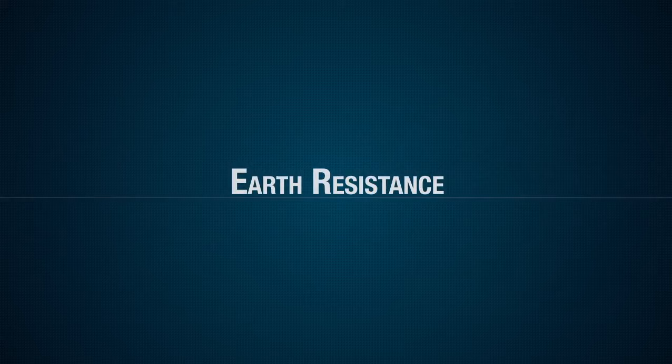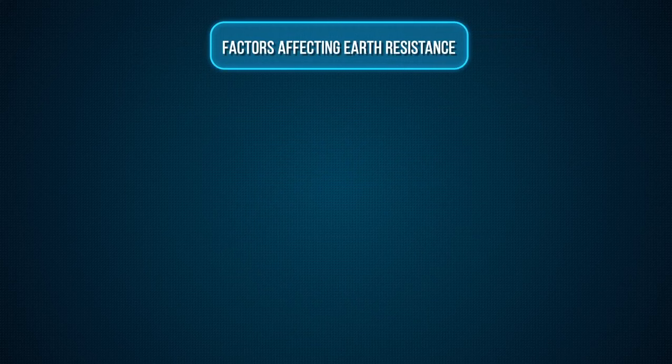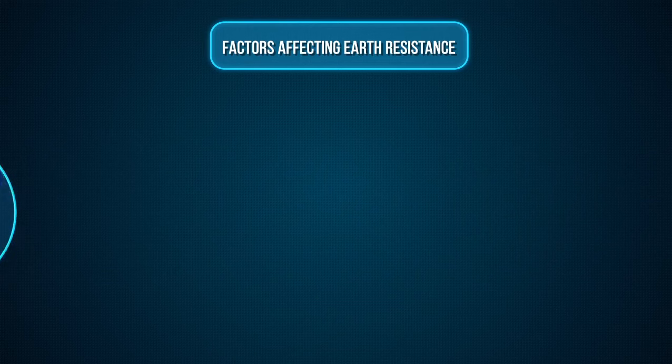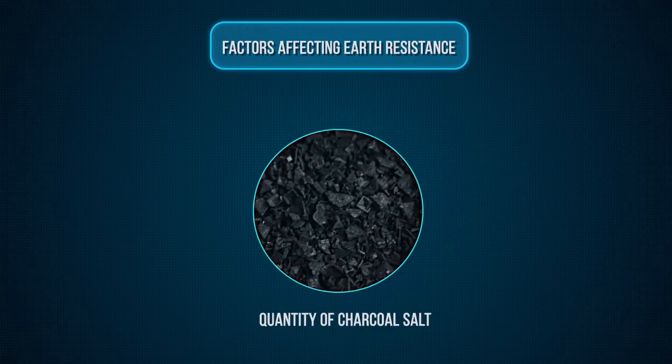Earth resistance. The resistance offered by the earth to the flow of current is known as earth resistance. The earth resistance is affected by the following factors: material properties of the earth wire and earth electrode, temperature inside earth pit, moisture content of the soil in earth pit, depth of the earth pit, and quantity of the charcoal salt layer used inside earth pit.